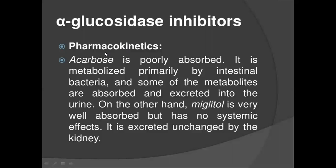Coming to the pharmacokinetics of alpha-glucosidase inhibitor: acarbose is poorly absorbed. It is metabolized primarily by intestinal bacteria, and some of the metabolites are absorbed and excreted into the urine. On the other hand, miglitol is very well absorbed but has no systemic effects. It is excreted unchanged by the kidney.